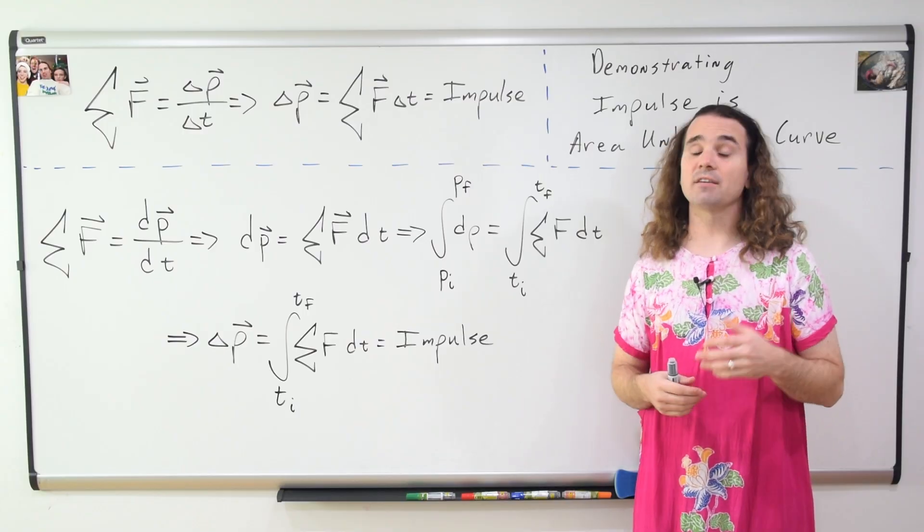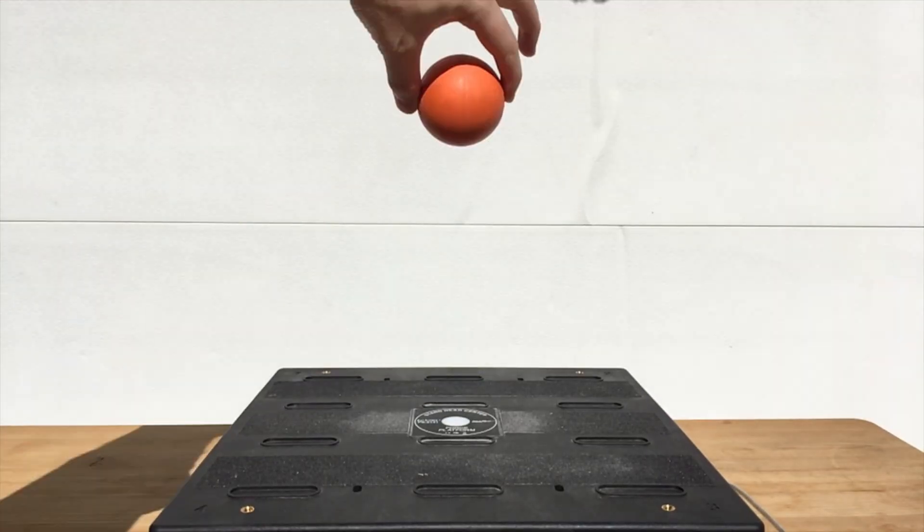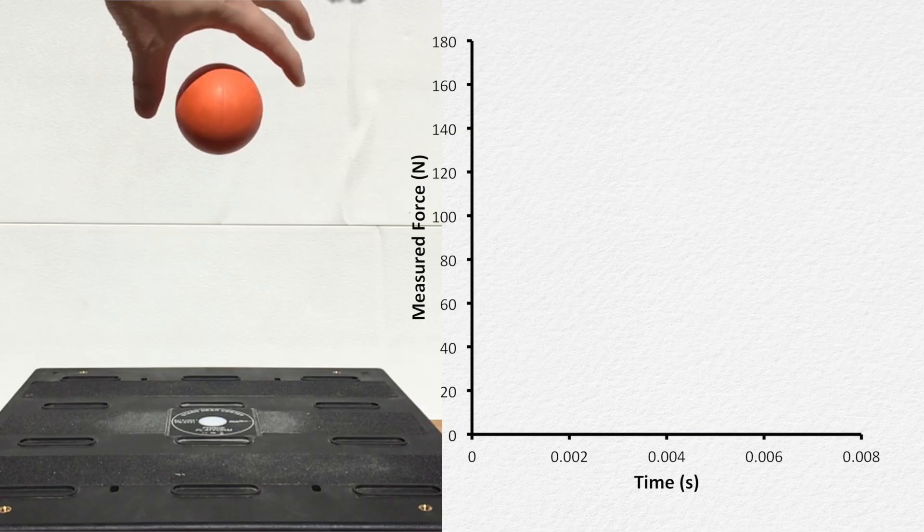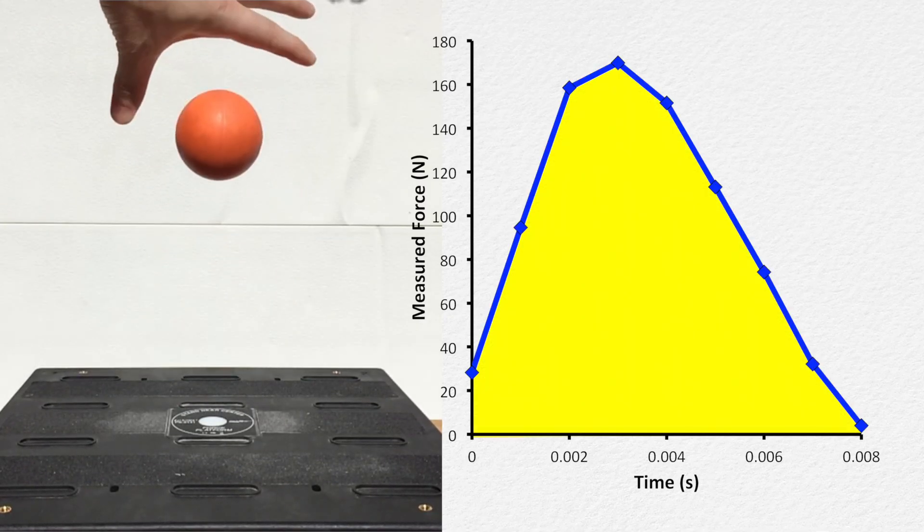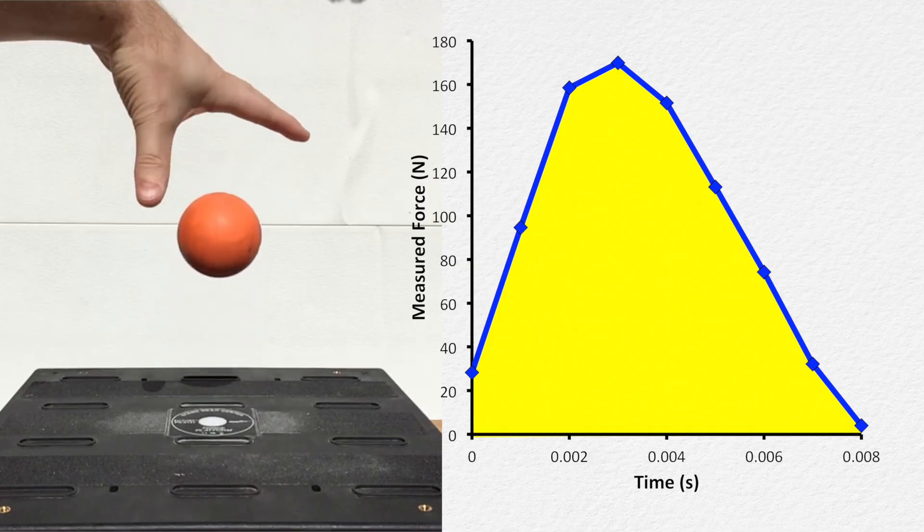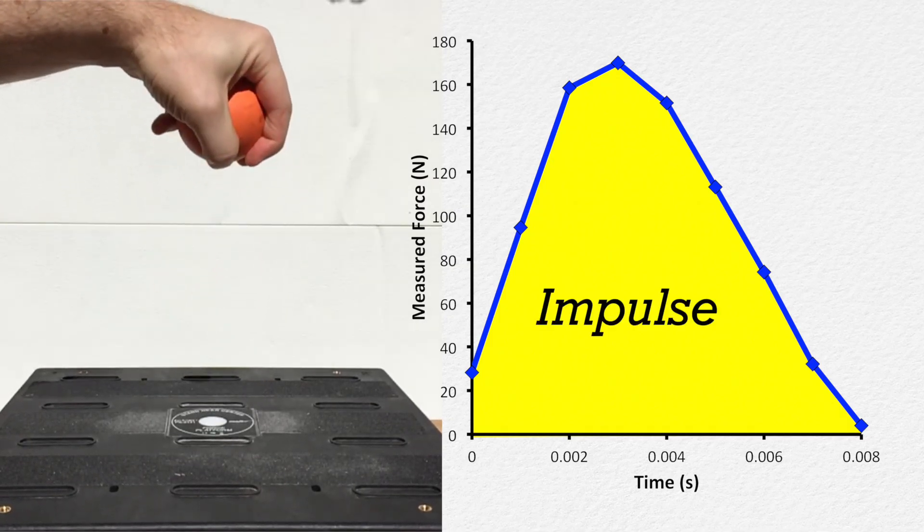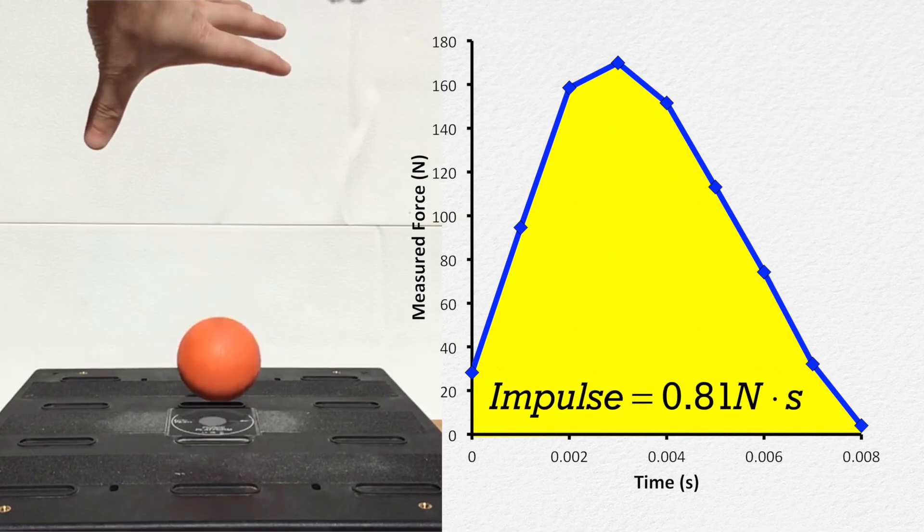So if we drop a ball on a force platform, we can measure the force exerted on the ball as a function of time. The area shown in yellow is the area between the curve and the time axis, which is the impulse. In this example, it is 0.81 newton-seconds.